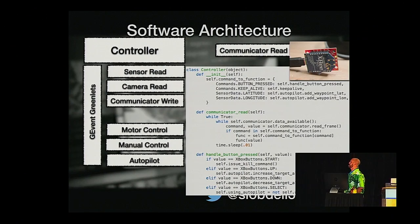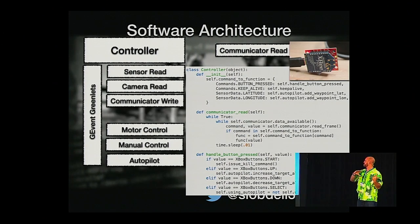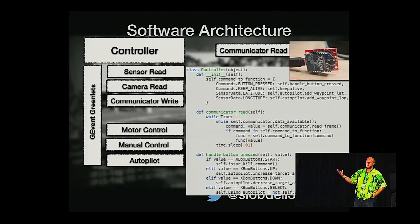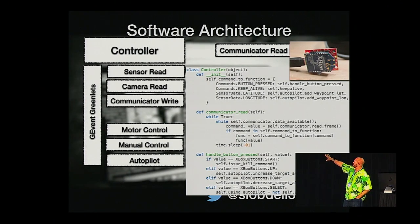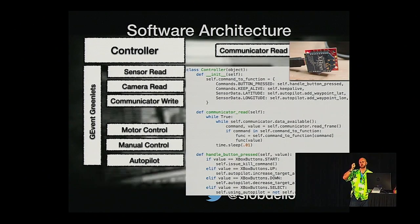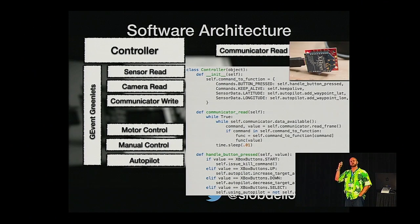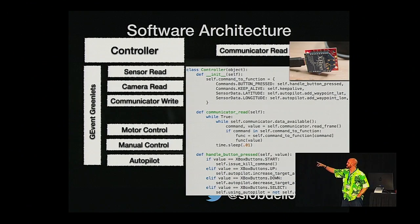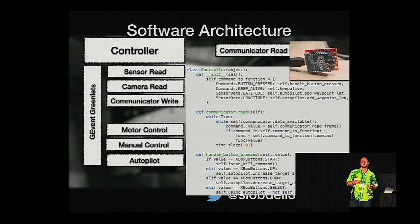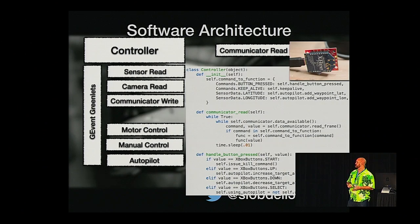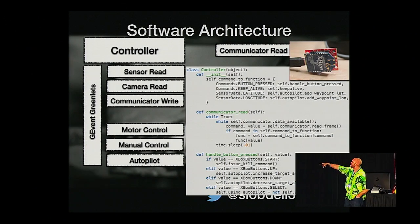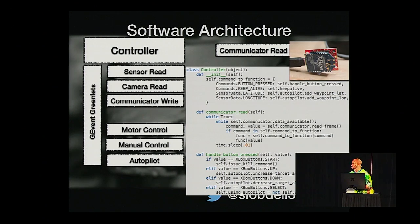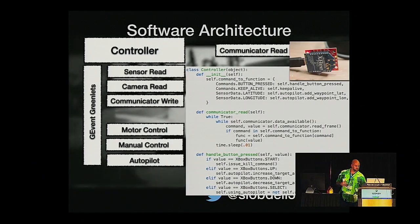On the receiving end, I have a reader and a writer on both the controller and the client. I have a dictionary mapping commands to the appropriate function, which gets called as soon as the command arrives, passing in the value. For example, from the Xbox control: if I press a button, it reports the button pressed; start issues the kill command, up increases the target altitude, and so forth.